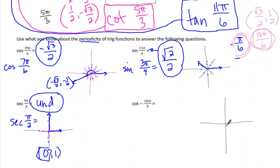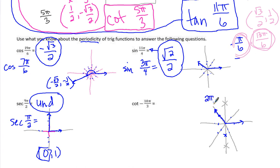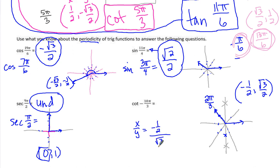For negative 10π/3, we divide the circle into thirds — 6 equal parts — and we go in the negative direction, counting 10 tick marks. Negative 10π/3 is coterminal with positive 2π/3. The coordinate there is (−1/2, √3/2). The cotangent is x over y, so negative 1/2 over √3/2 simplifies to negative √3/3. That is the answer for the cotangent at negative 10π/3.